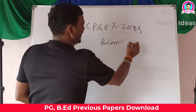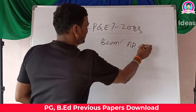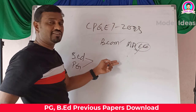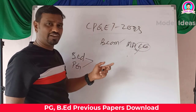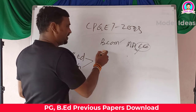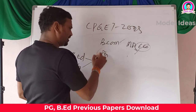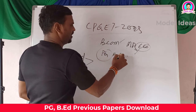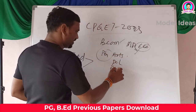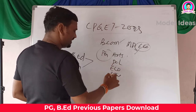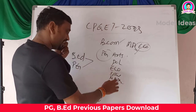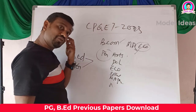Then we will do M.A. Economics. We will take a look at the P.G. arts course. This is the P.G. arts course, which includes political science, economics, social science, philosophy, and history.